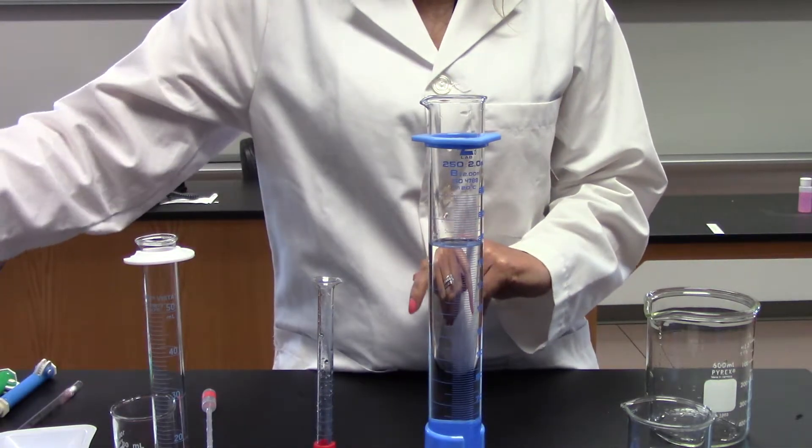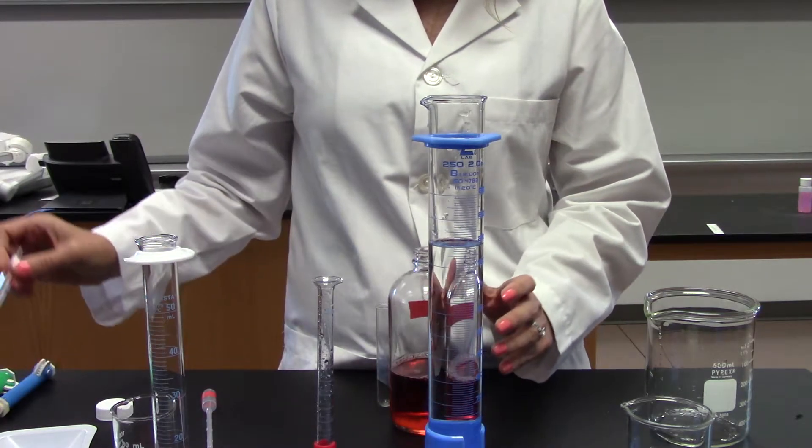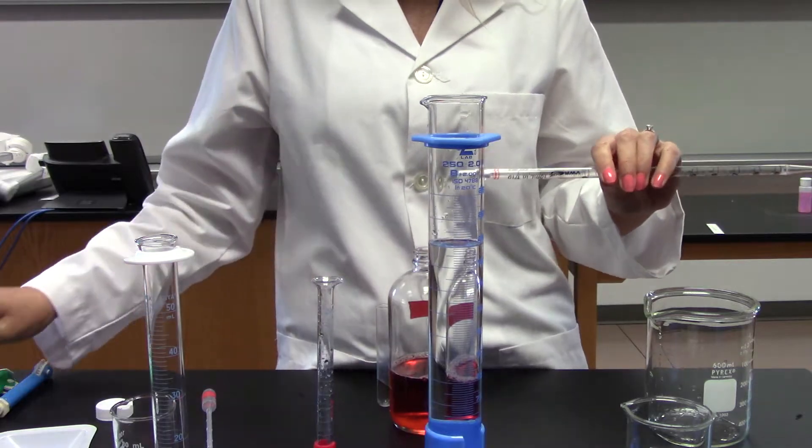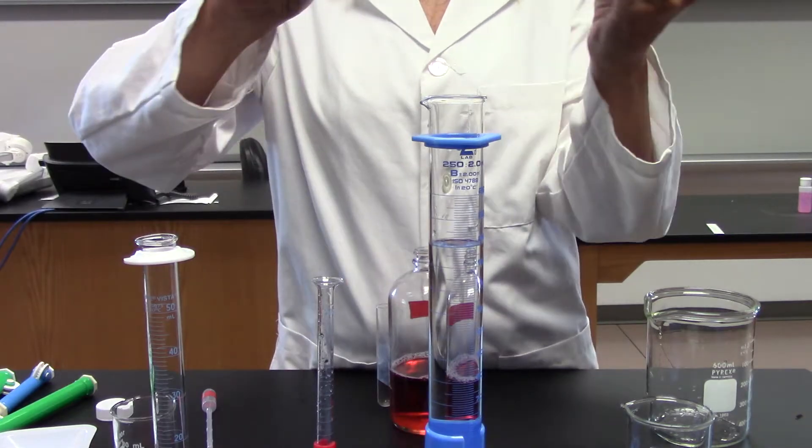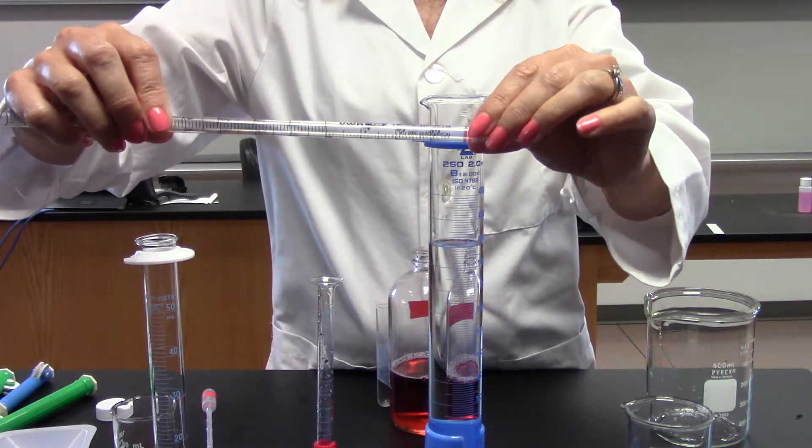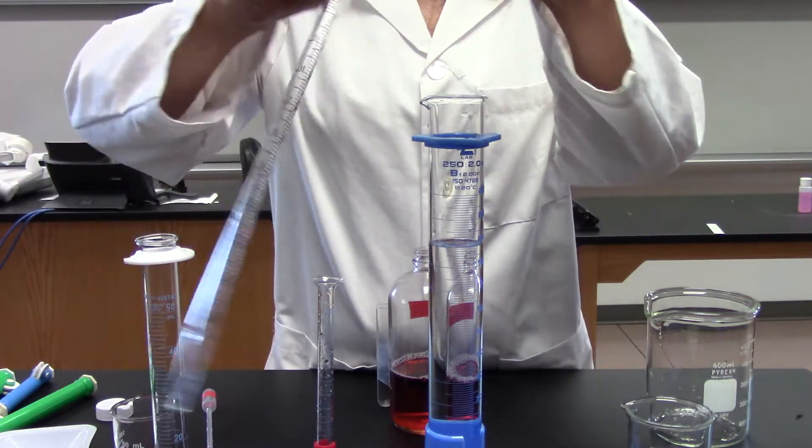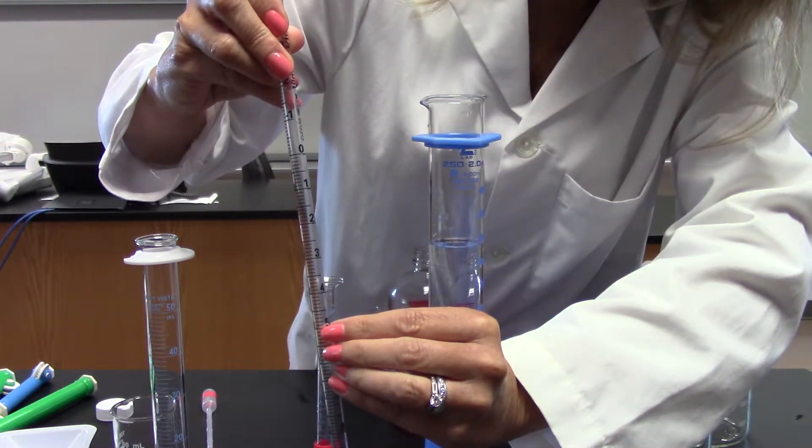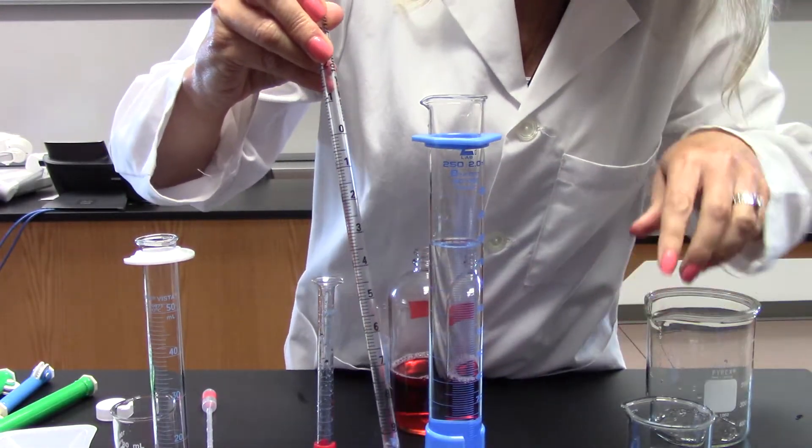I'm going to add some liquid to this graduated cylinder using a pipette. This is a 10 milliliter pipette. I know that because it says 10 milliliters right here. It also tells me that each of these graduations is one tenth of a milliliter, so each of these lines is a tenth of a milliliter.